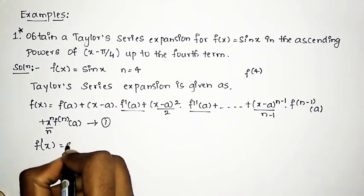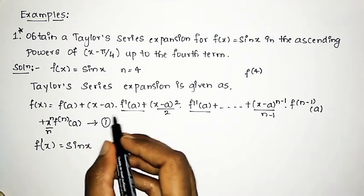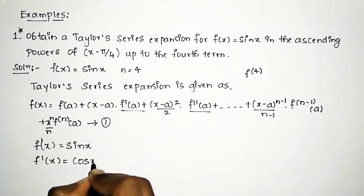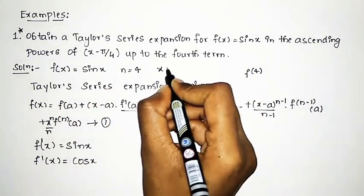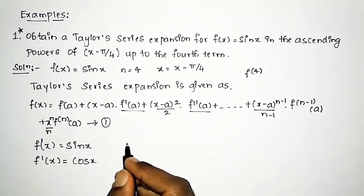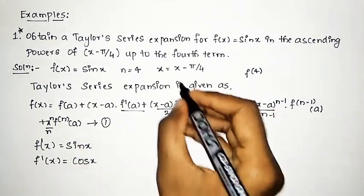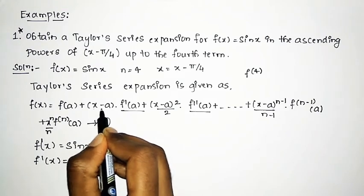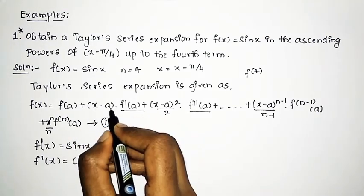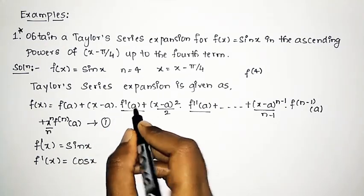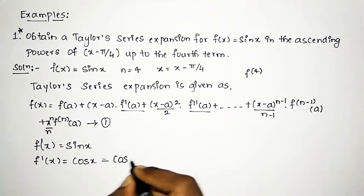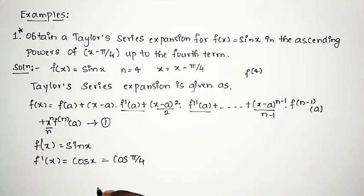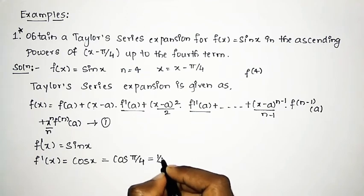We know that f(x) = sin(x), so the first derivative f'(x) = cos(x). Here, since we are expanding in powers of (x - π/4), we identify a = π/4. Therefore, f'(a) = cos(π/4). From trigonometry, cos(π/4) = 1/√2.